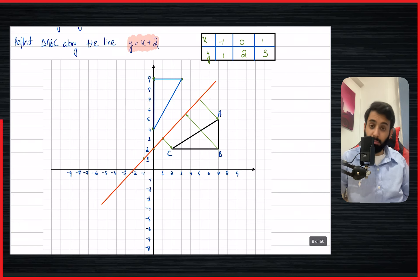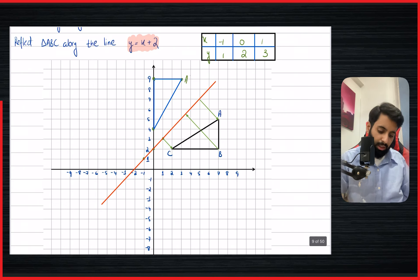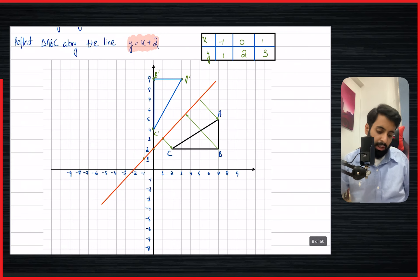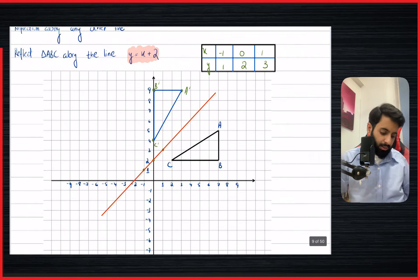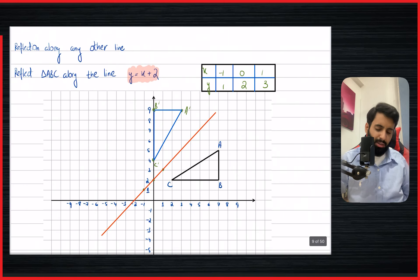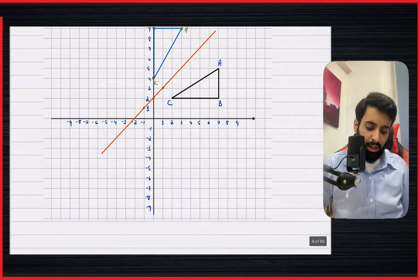I'll erase the arrows to keep it tidy, then join the three points with straight lines to make a nice triangle. Make sure the size remains the same. There we go — we've successfully reflected triangle ABC along the line y equals x plus 2. In the next video we're going to learn how to determine reflections: given an object and an image, identify what line the object is reflected by. See you then — take care, bye.